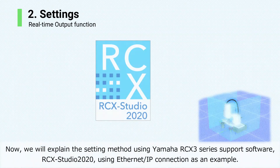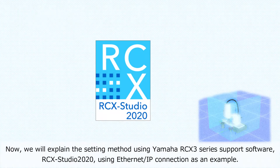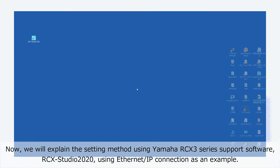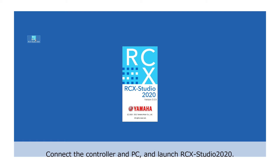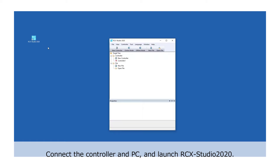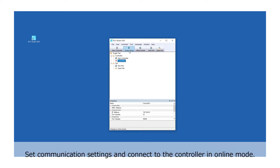We will now explain the setting method using Yamaha RCX3 series support software RCX Studio 2020, using EtherNet/IP connection as an example. Connect the controller and PC, launch RCX Studio 2020, set communication settings, and connect to the controller in online mode.